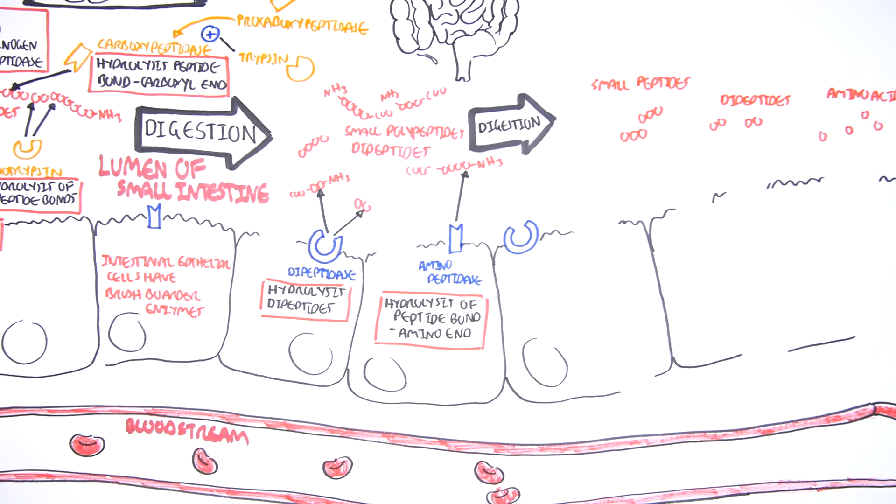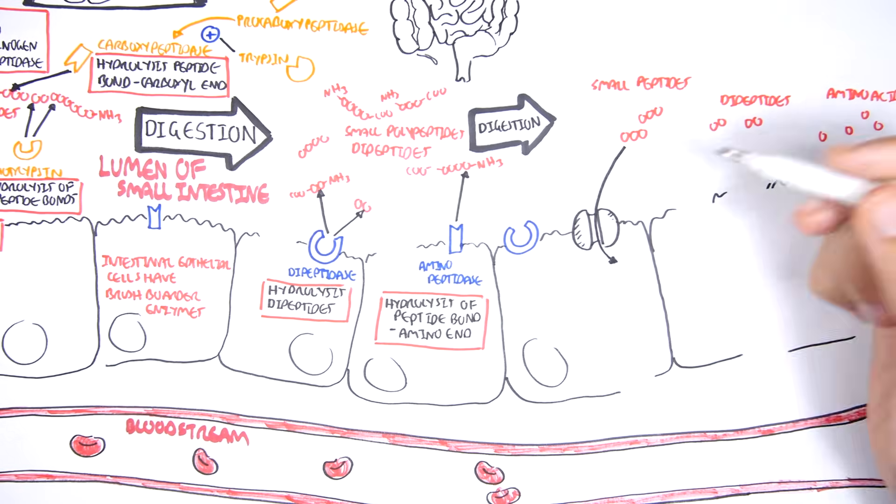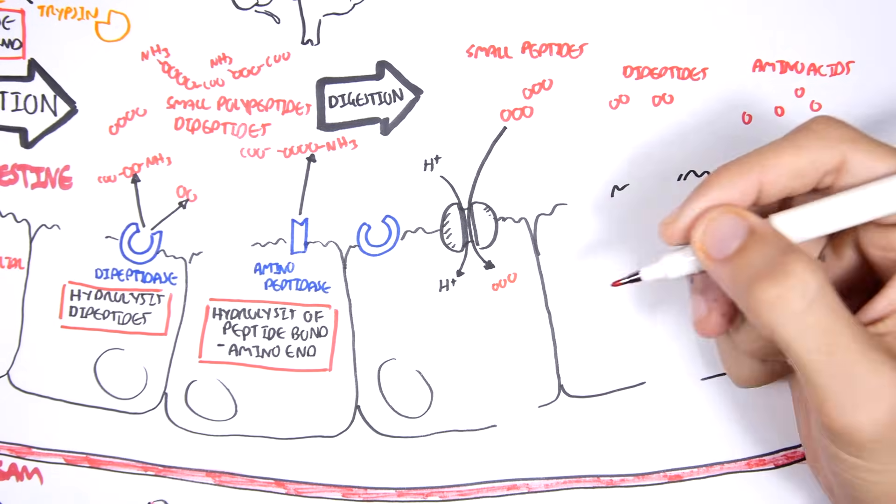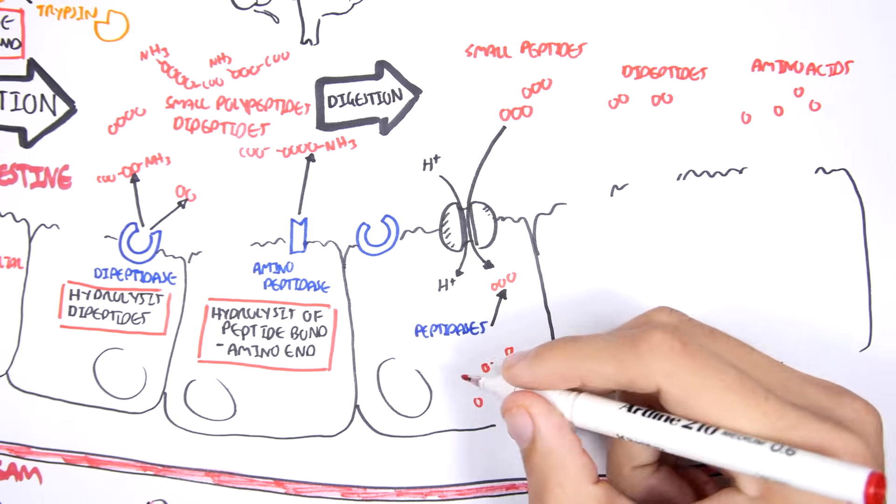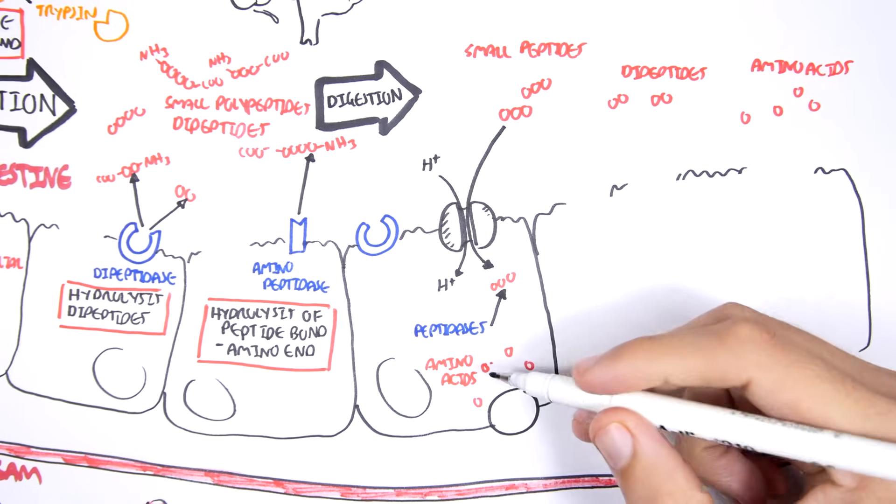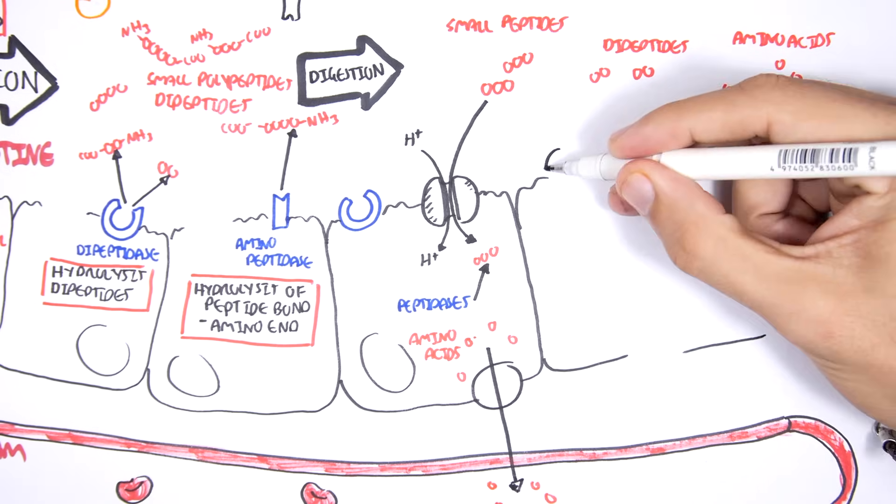The body can then begin to absorb these amino acids. The small peptides, such as the tripeptides, can be absorbed through cotransporter with hydrogen. Once inside the cell, the tripeptide can be hydrolyzed by the cell's own peptidases, which will break it down to amino acids. Once in the amino acid form, the amino acid can diffuse into the bloodstream, where it will be carried to the liver.